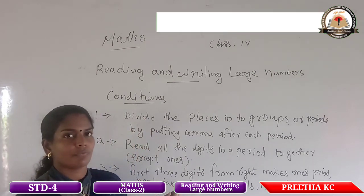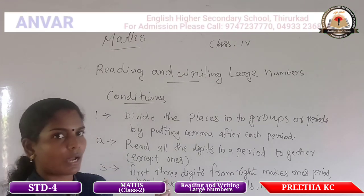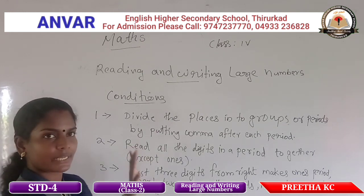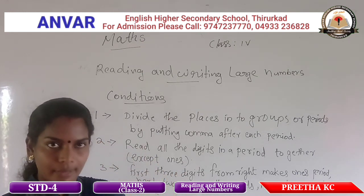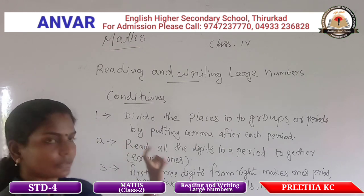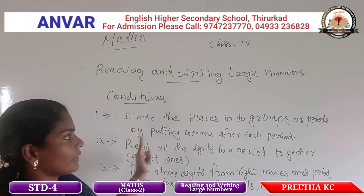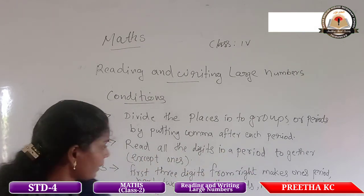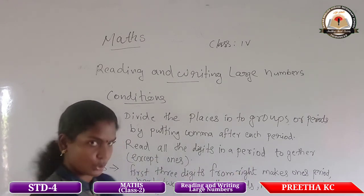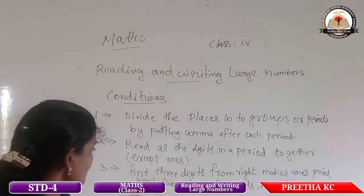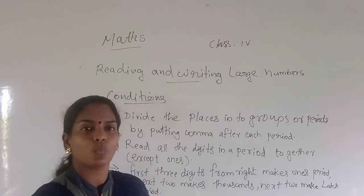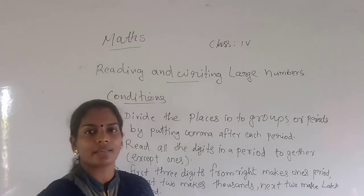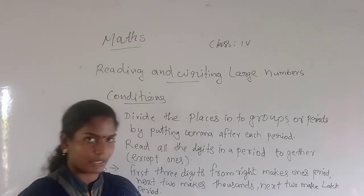About these conditions, we want to solve an example — how to read and write large numbers using these conditions. Let me repeat: for reading and writing large numbers, divide the places into groups or periods by putting a comma after each period. Read all the digits in a period together. First three digits from the right make the ones period; next two make the thousands period; and next two make the lakhs period. These are the important conditions.